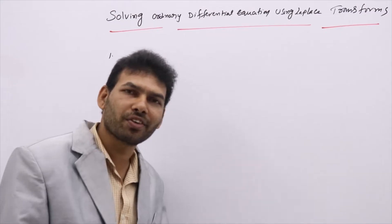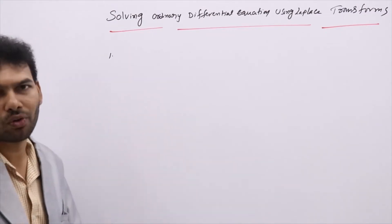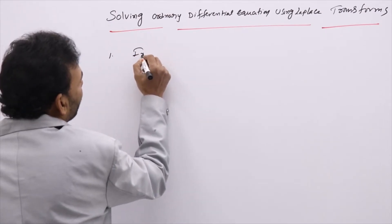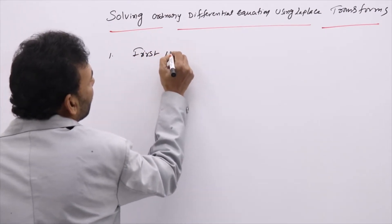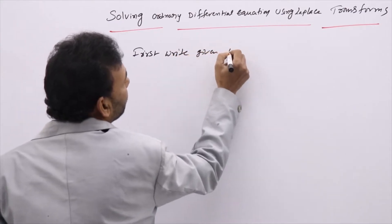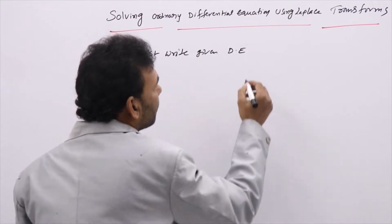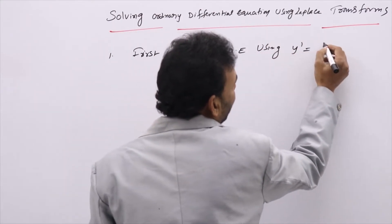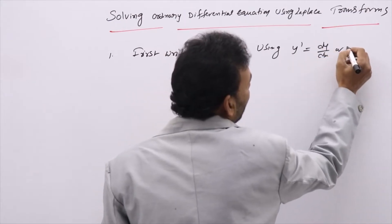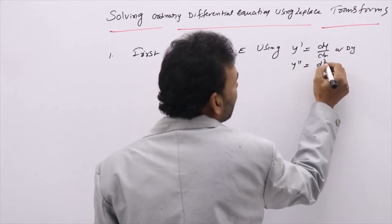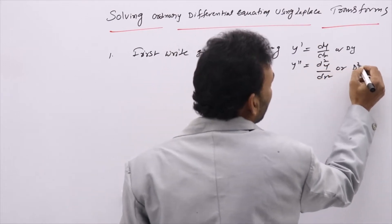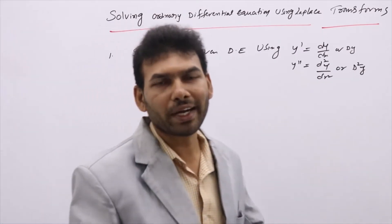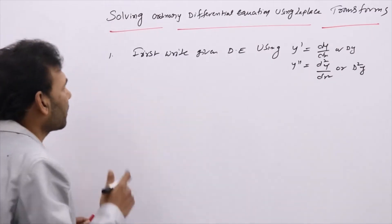Let's discuss the procedure for solving an ordinary differential equation using Laplace. First, write the given DE using the notation y' and y'', where y' = dy/dx and y'' = d²y/dx². The given DE will be rewritten in terms of y'', y', y like this.